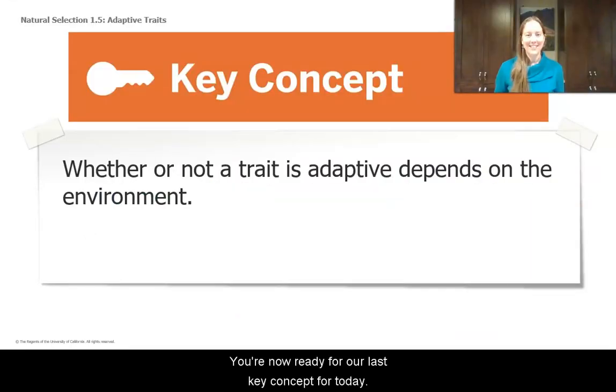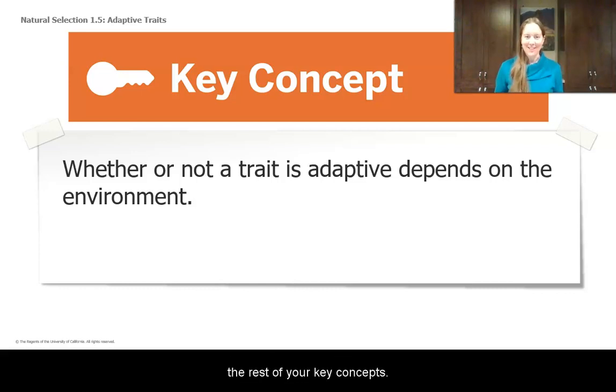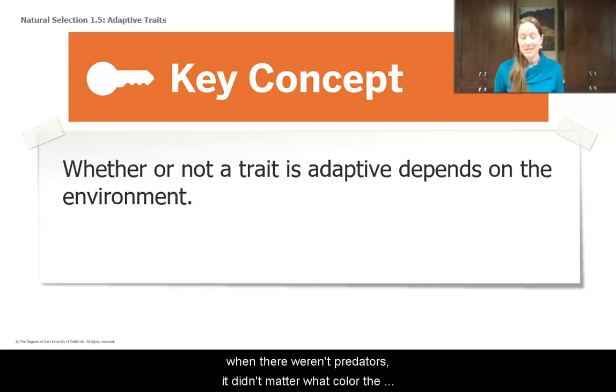You're now ready for our last key concept for today. Go ahead and record this where you're keeping track of the rest of your key concepts. Whether or not a trait is adaptive depends on the environment. You saw that today with our ostrilopes. When the environment was yellow and there were carnithons, being yellow helped the ostrilopes blend in and hide and survive. When there weren't carnithons, when there weren't predators, it didn't matter what color the ostrilopes were. They had an equal chance of survival.